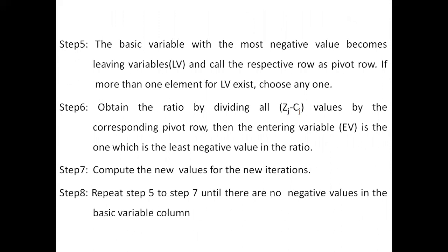If more than one element per leaving variable exists, choose any one. In step 6, obtain the ratio by dividing all ZJ minus CJ values by the corresponding pivot row elements. Then the entering variable is the one which has the least negative value in the ratio.